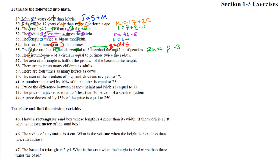Number 36: the circumference C of a circle is equal to pi times twice the radius — that's our formula, two pi r right there. Number 37: the area of a triangle is one half of the product of base and height, so we take base times height and take one half of it: A = ½bh.